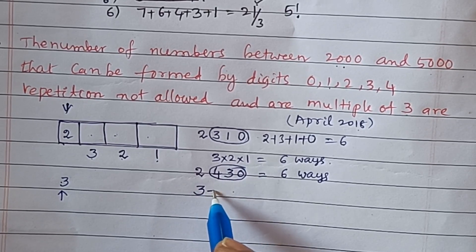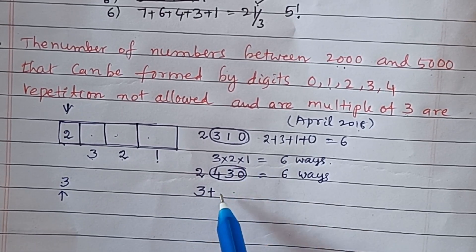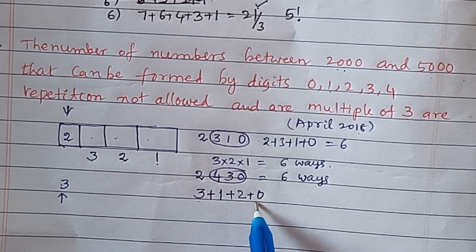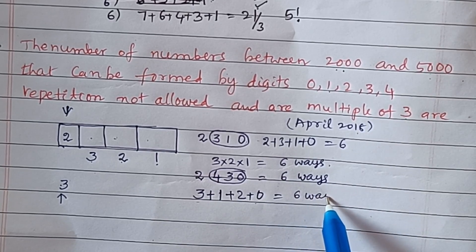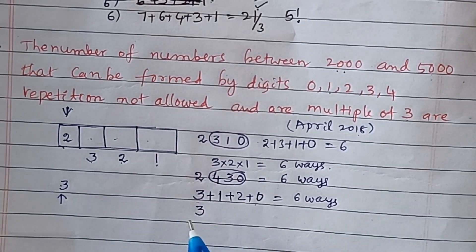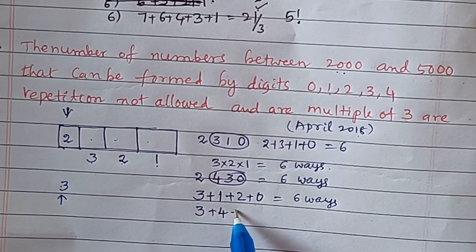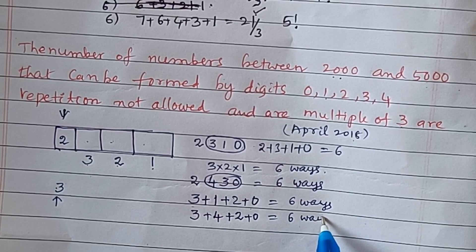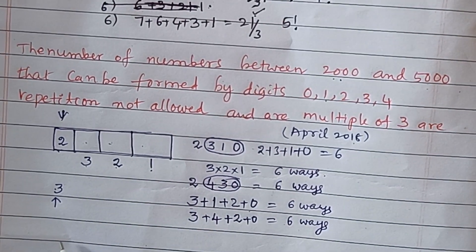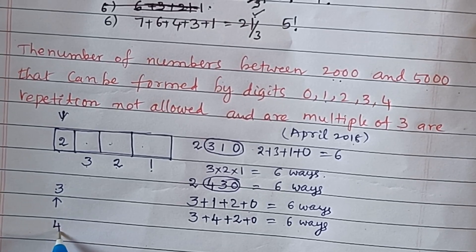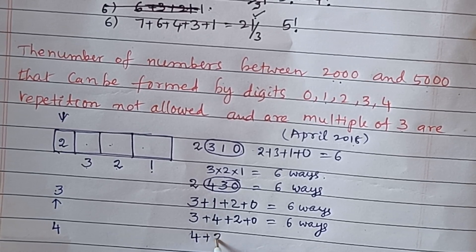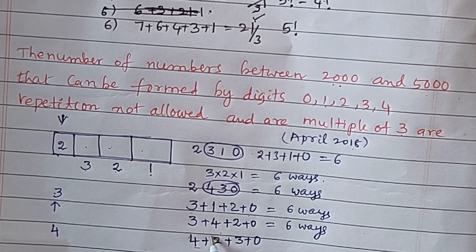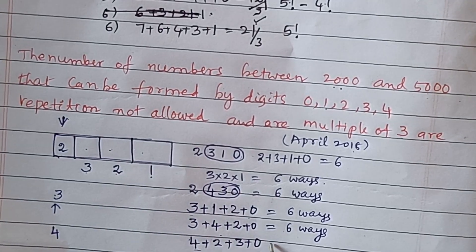For another case, the digit sum must be divisible by 3. For example, 4 plus 2 plus 3 plus 0 equals 9, which is divisible by 3. Among the three remaining digits, we have 3 ways, then 2 ways, then 1 way, giving 6 ways for this case as well.